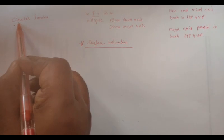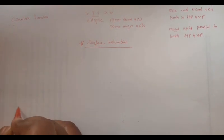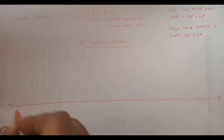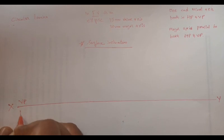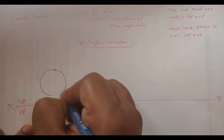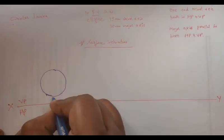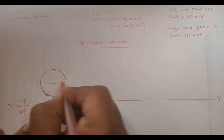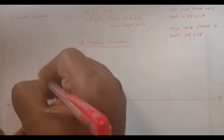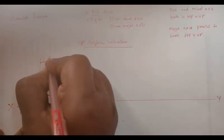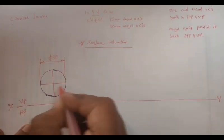First, we are going to draw the XY line. The XY line should be thin, with capital X and capital Y, and VP and HP labeled in between. Then we are going to draw the circle with a thick line. You would normally draw it with a compass and scale. The major axis determines the diameter — here the diameter is 30mm. This gives us points A dash, B dash, C dash, and D dash.